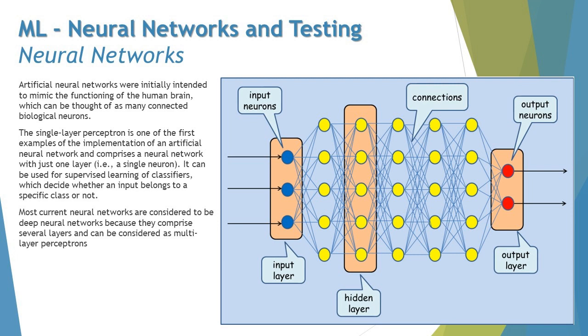Now, most current neural networks are considered to be deep neural networks because they comprise several layers and can be considered as multi-layer perceptron. So you may find a basic system with single neuron, or sometimes you can find multiple layers or hidden layers, which could be of multiple layers too, between the input and output neurons to make a very precise and very wise decision.